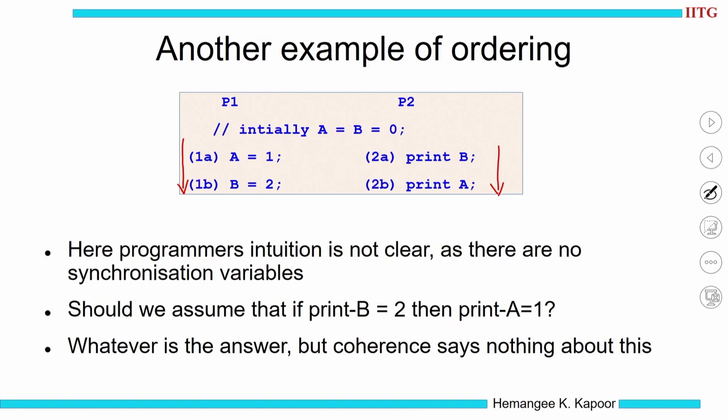I would encourage you to pause the video several times to understand what the processes are doing and try it yourself before moving on. Here, the programmer's intuition is not clear because the two processes run in parallel — one is just writing variables, the other is printing — and we don't know what the programmer intends. Overall, the programmer's intuition is not clear, and whatever the answer could be, coherence has nothing to tell us about this.